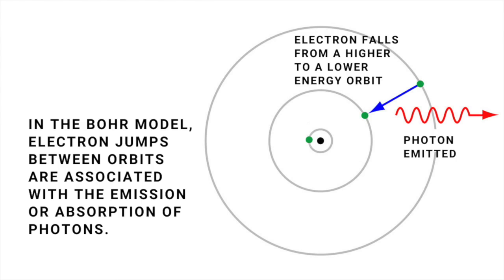If it jumps from an outer, higher energy orbit to an inner, lower energy orbit, the energy difference between the two is given off as a quantum of light. Once the electron reaches the lowest energy orbit, it can't fall any further and is safe from the clutches of the nucleus.